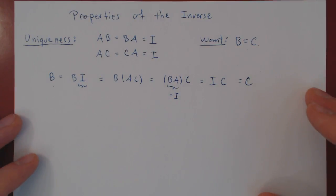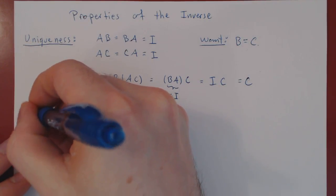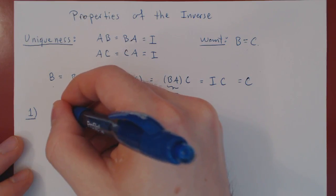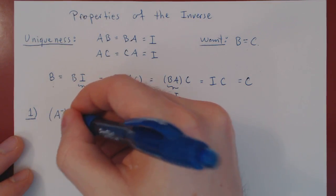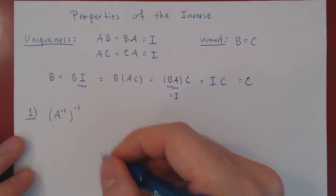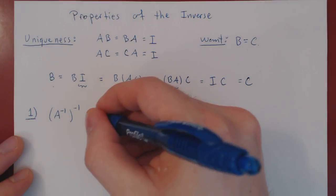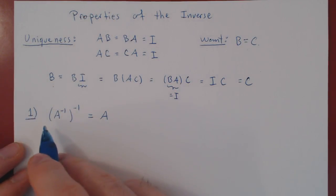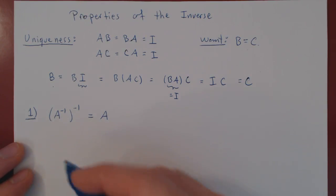What other properties does the inverse possess? First: if you look at A inverse and ask what is the inverse of this matrix, inverting the inverse of A gives you A back. This looks intuitive, but we'll still have to prove it.